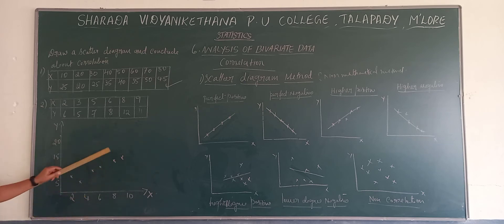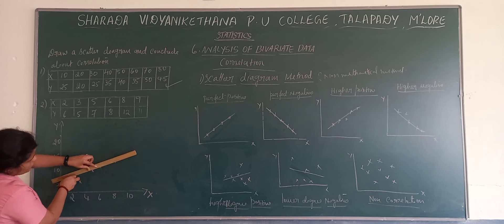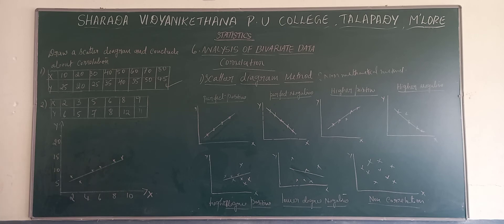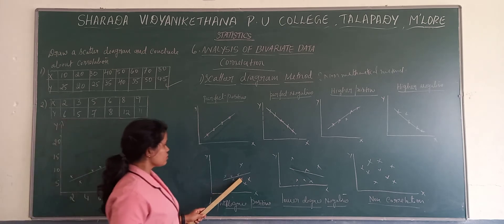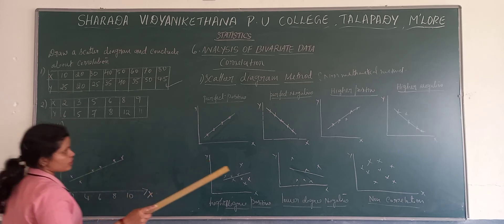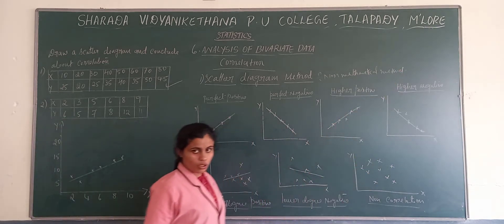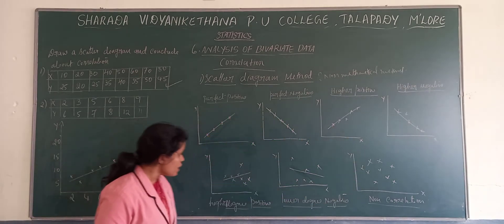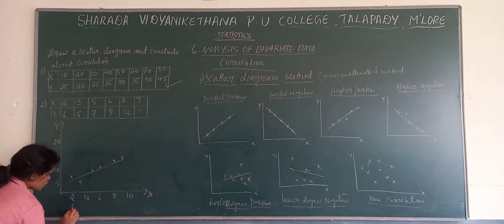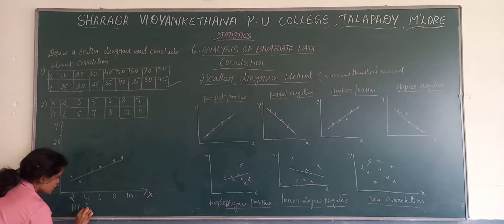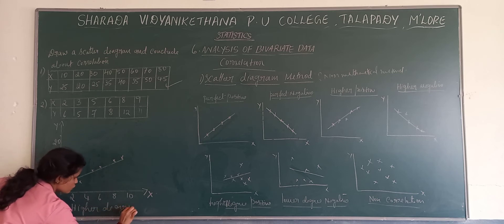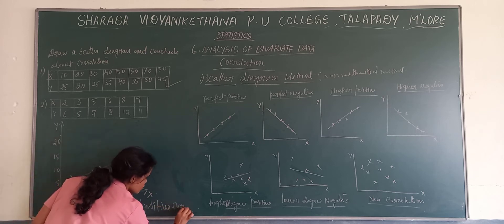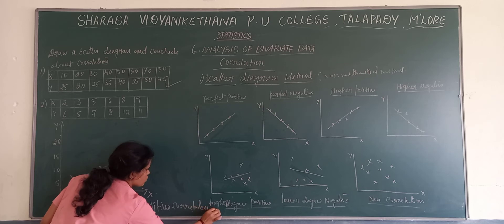When we get the wider one, if it is wider, it should go to the corner. So here also we can compute that — among these, if you observe, it is a higher degree positive. So here also we have higher degree positive correlation.